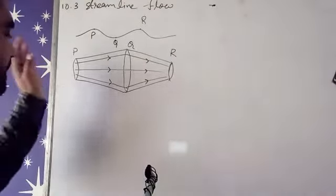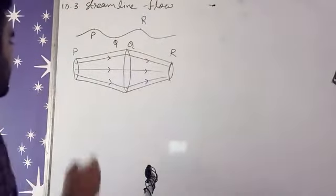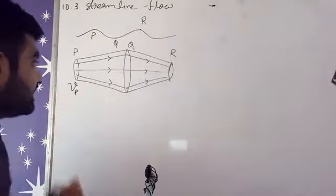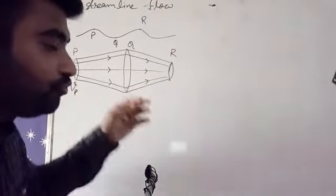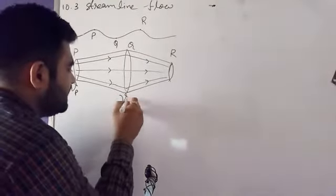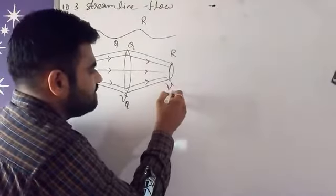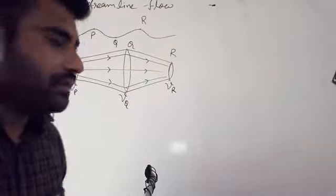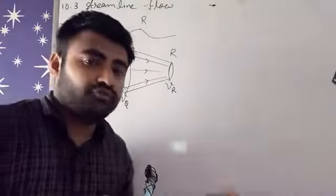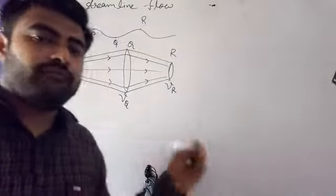So whatever water is there, if it comes to this point, its speed will be Vp. But here the area changed, so its speed will change a little and it will get Vq speed. And here we will get Vr speed.